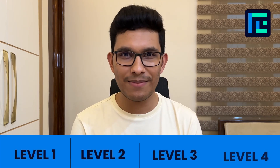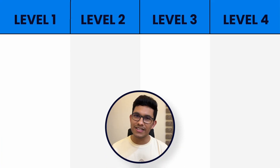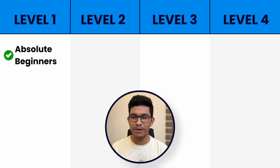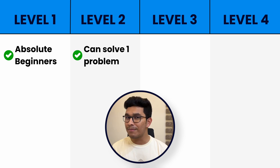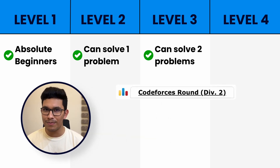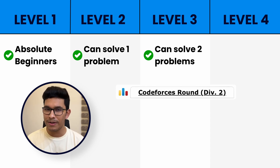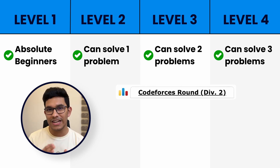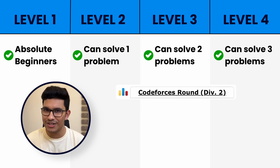At TLE, we have divided the entire CP training into four levels. Level 1 is for people who are absolute beginners — people who don't even know a programming language. Level 2 is for people who can solve one problem in a Codeforces Division 2 contest. Level 3 is for people who can solve two problems in a Division 2 contest, while Level 4 is for people who can solve three problems in most Codeforces Division 2 contests.